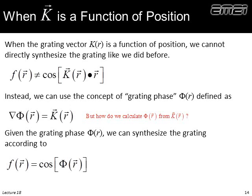Now, what happens when this grating vector is a function of position? Remember the two pieces of information the grating vector carries: the orientation of the grating and its period — we can potentially spatially vary those independently. The most obvious thing would be to just let K be a function of position and try to construct using cosine of K·r. It turns out that doesn't work — we'll show you why. Instead, we introduce another parameter called the grating phase, φ, which is a function of r.